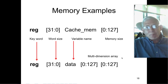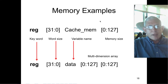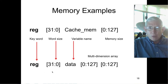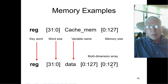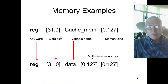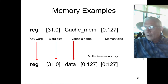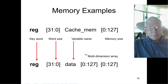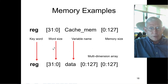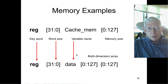Here we have a two-dimensional array of 32-bit words that is 128 by 128, so that's pretty good size. You have your keyword register, your word size, your variable name, and then your multi-dimensions.